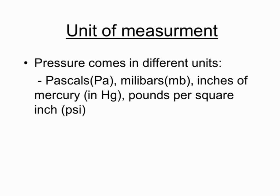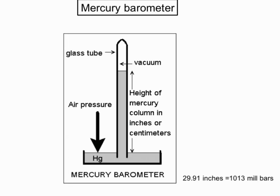How can we measure atmospheric pressure? Through a mercury barometer, we can measure the atmospheric pressure. It consists of a glass tube which is sealed at one end and filled with mercury. After being heated to expel the air out, it is inverted into a small cup of mercury. The mercury in the tube sinks slightly and creates a vacuum above it. At 29.91 inches, the atmospheric pressure is 1013 millibars.